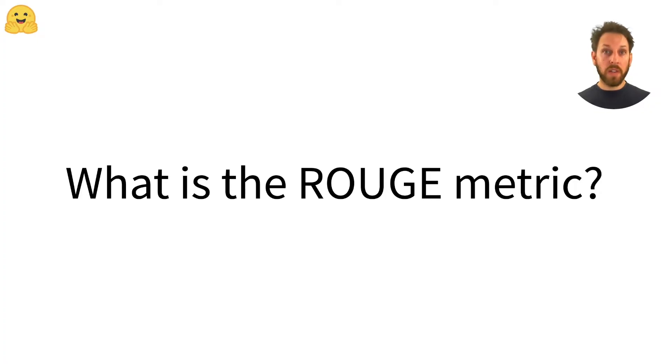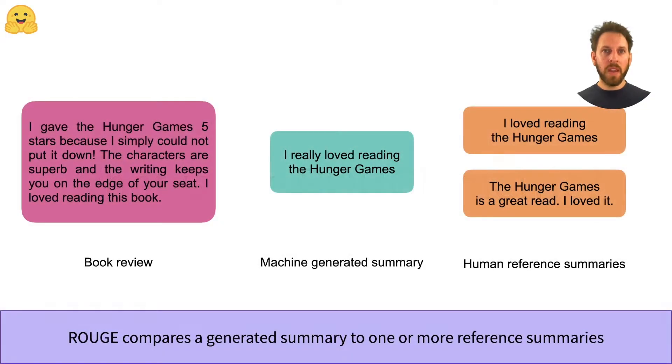In this video, we'll take a look at a widely used metric for text summarization called ROUGE. There are actually several variants of ROUGE, but the basic idea behind all of them is to assign a single numerical score to a summary that tells us how good it is compared to one or more reference summaries.